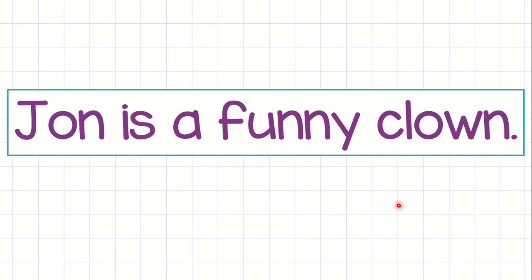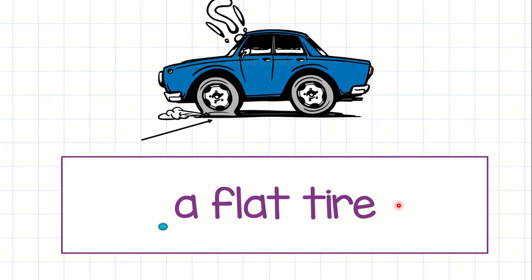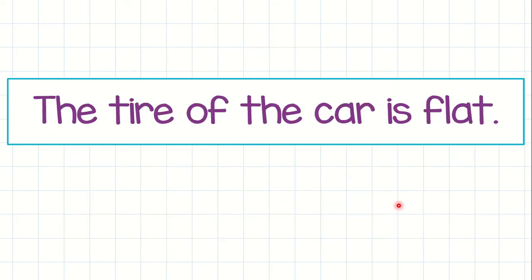Next one: a flat tire. A flat tire. Now let's put it in a sentence. The tire of the car is flat. Again, the tire of the car is flat.